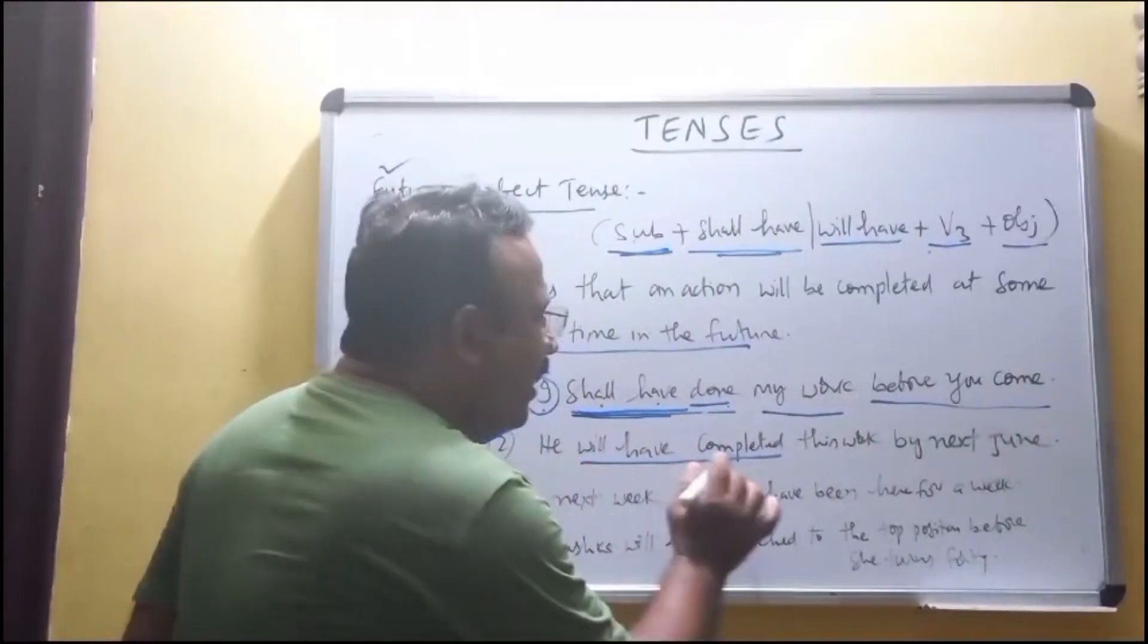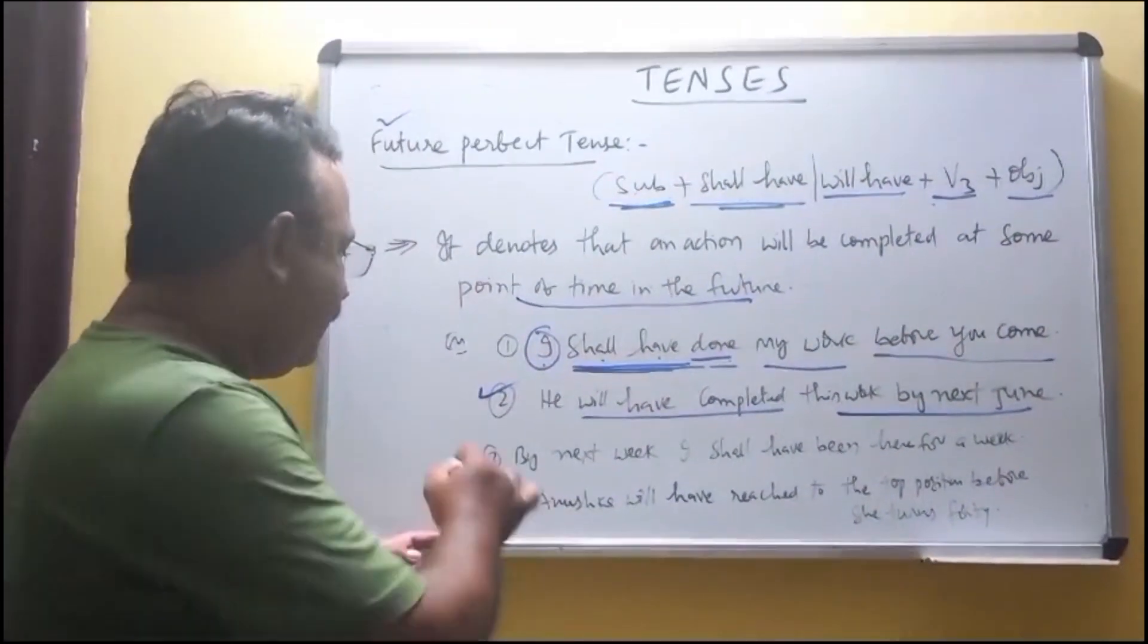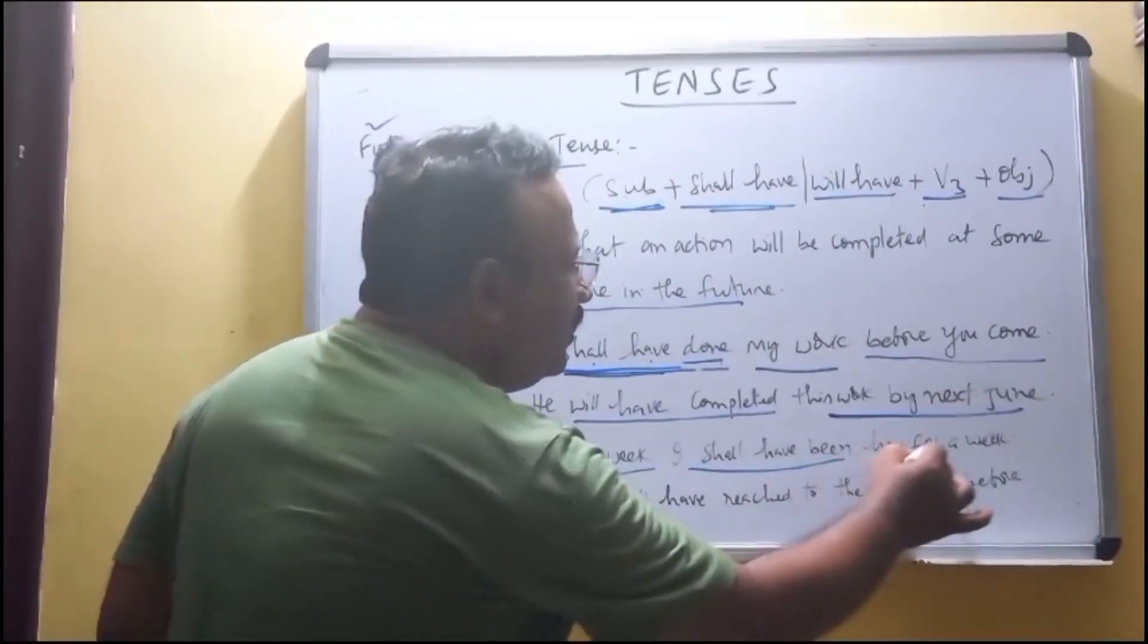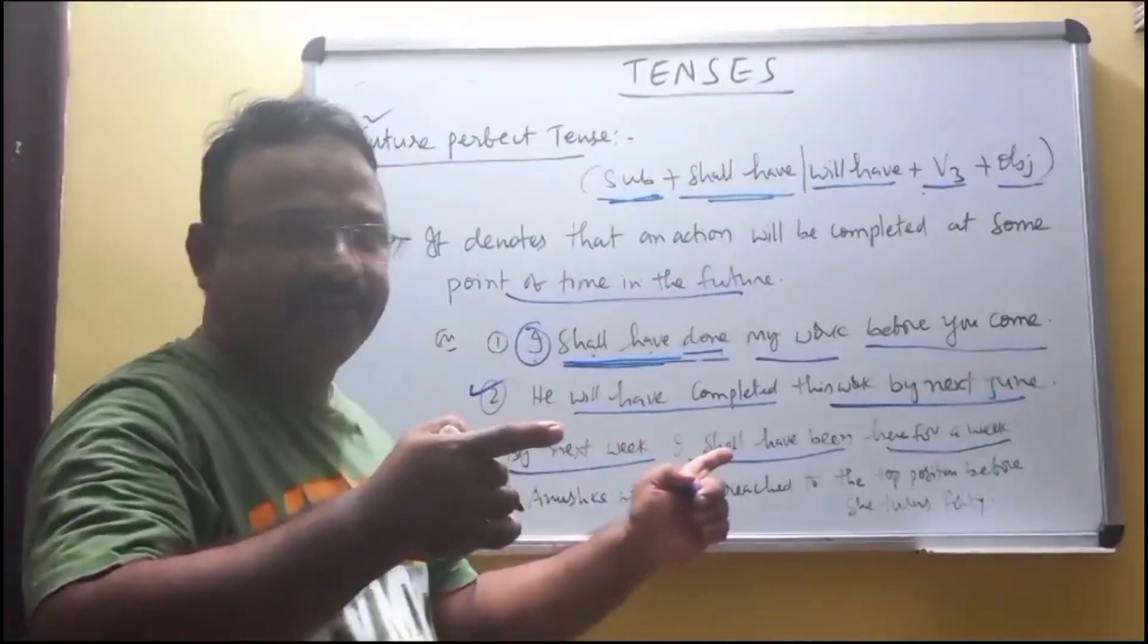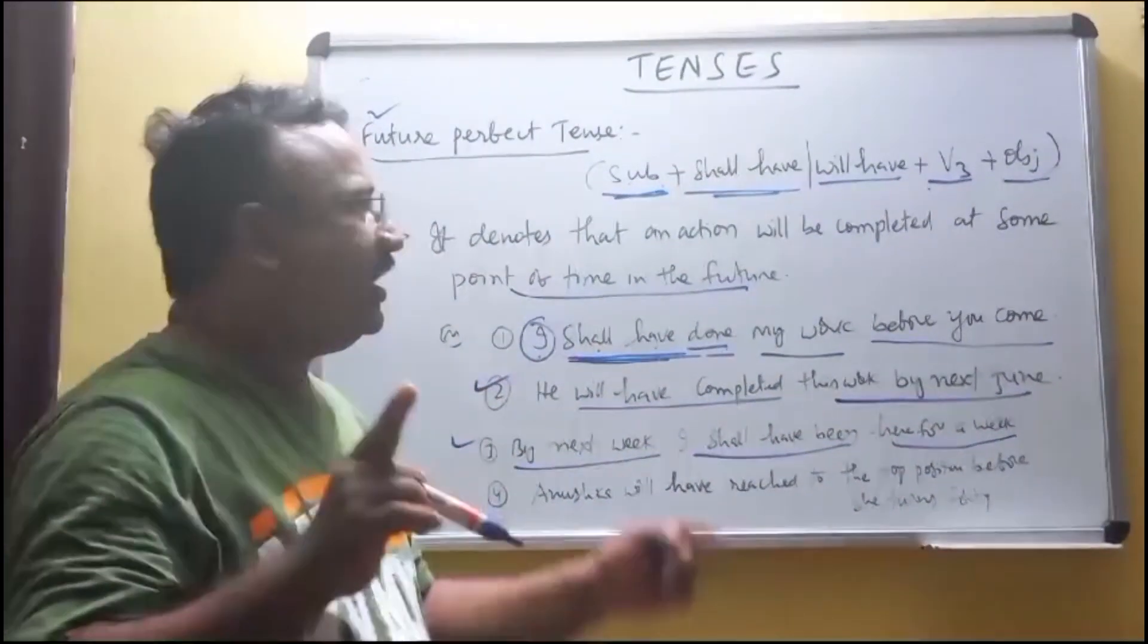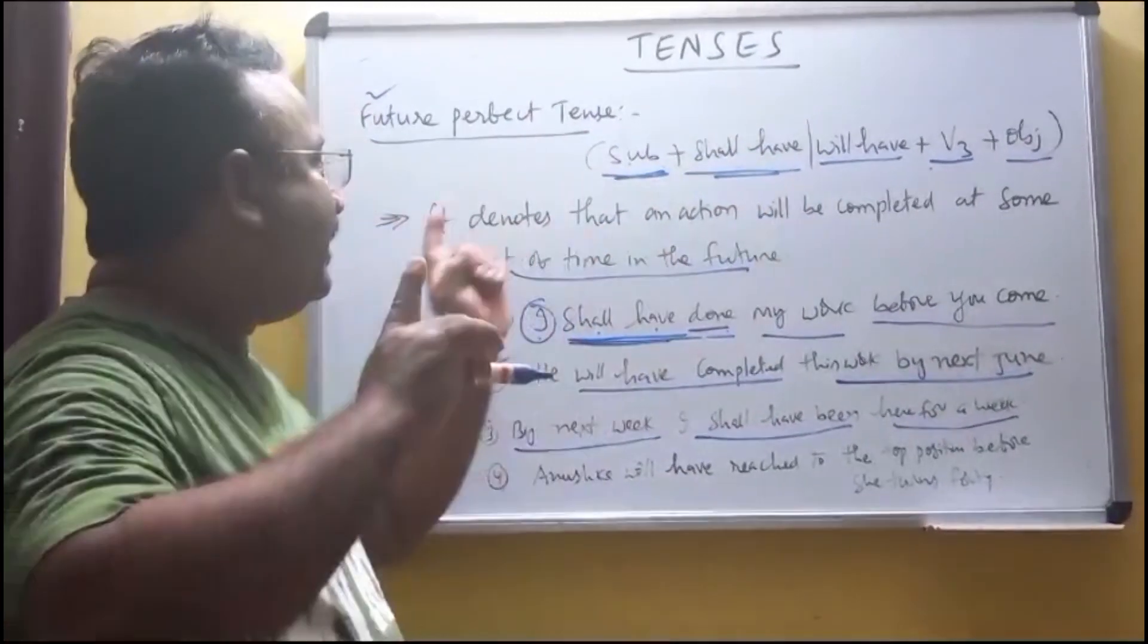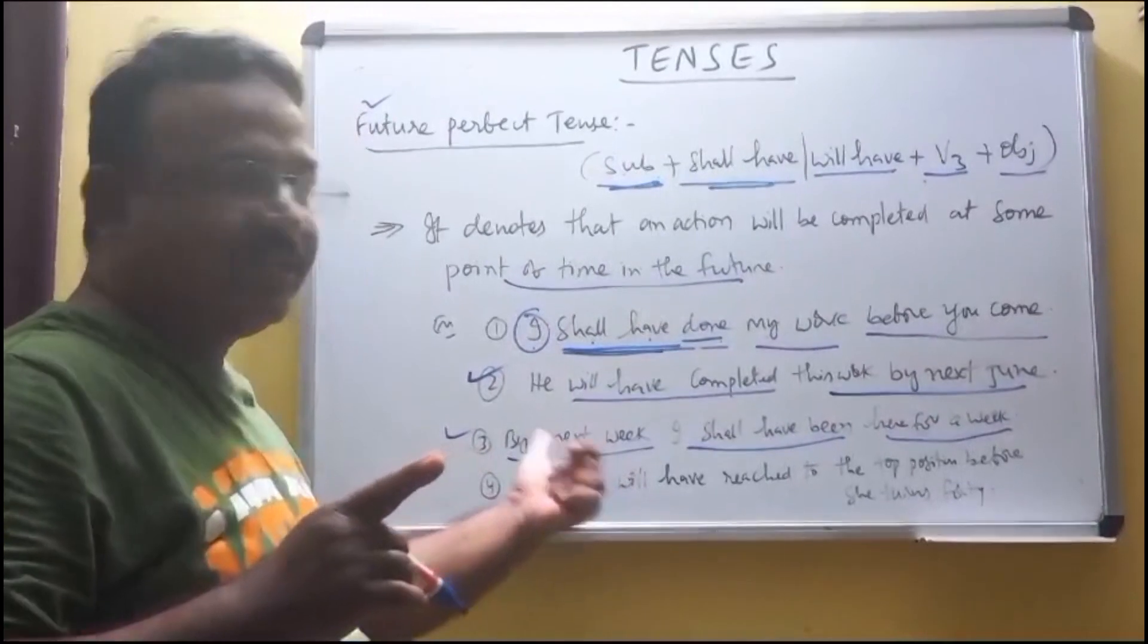See, he will have completed this work by next June. Next, by next week, I shall have been here for a week. That means it denotes that an action will be completed at some point of time in the future. That is the best example.